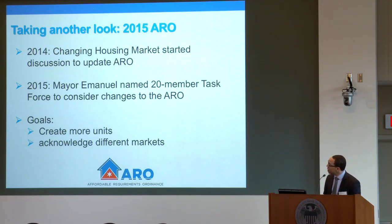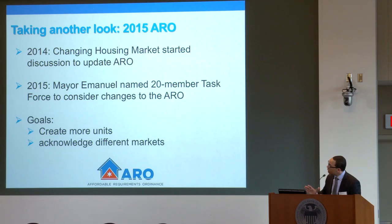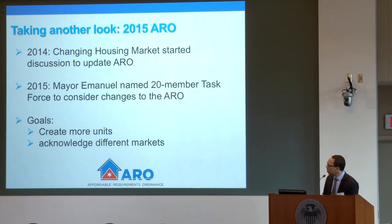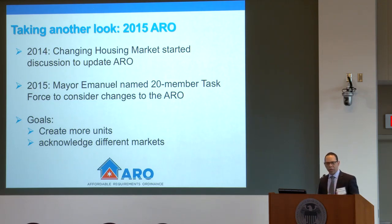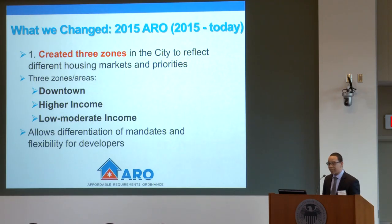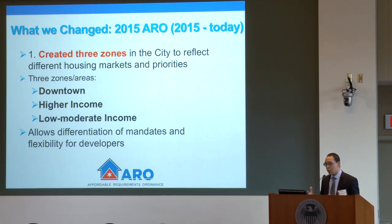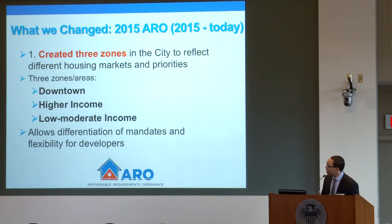Then in 2014, we were dealing with a very changing housing market — coming from a housing crash as conditions were getting better. We convened a task force and decided to retool our ARO again. The goal was to create more units, but we also understood that because we had a citywide ordinance, there were different markets in the city. So we created three zones based upon economic factors: downtown, higher income areas, and low-moderate areas.